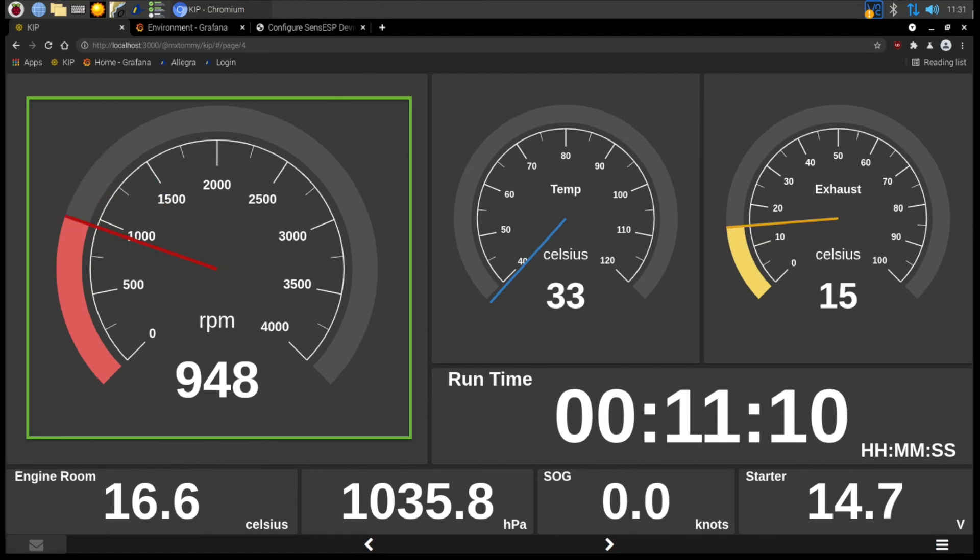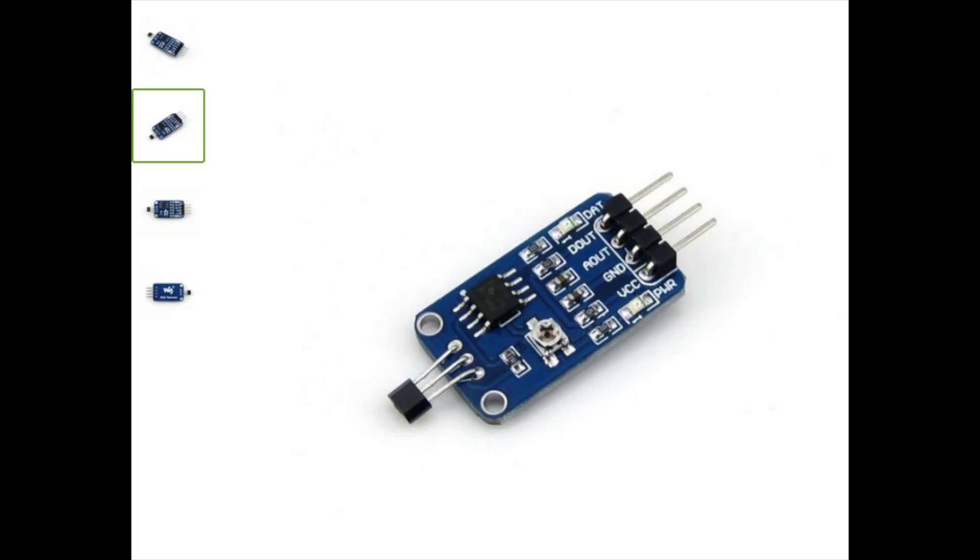So let's make a start with RPM. Initially I started to look at hall effect sensors which basically look for a magnetic signal every time something rotates. This would mean sticking something to the engine to a rotating part and also mounting the sensor pretty close to it so that it would pick it up.